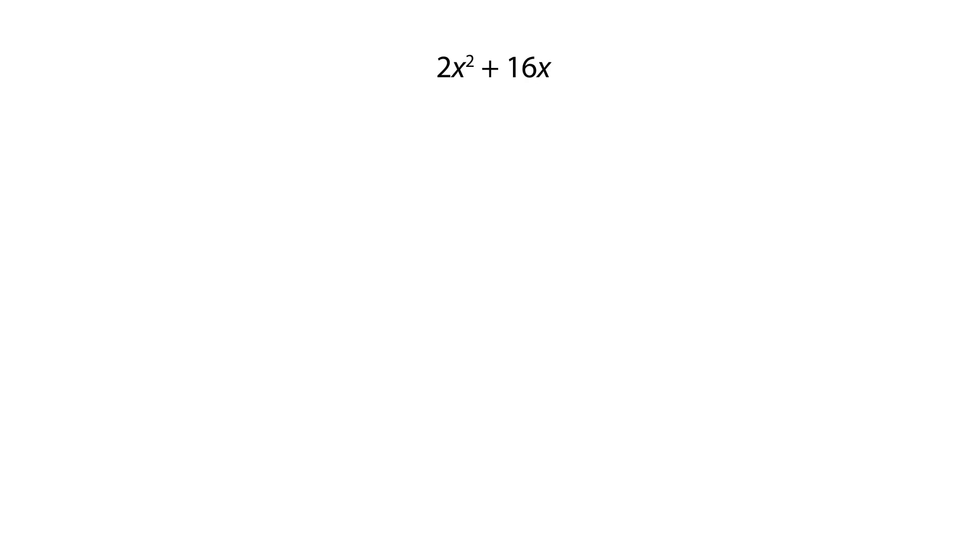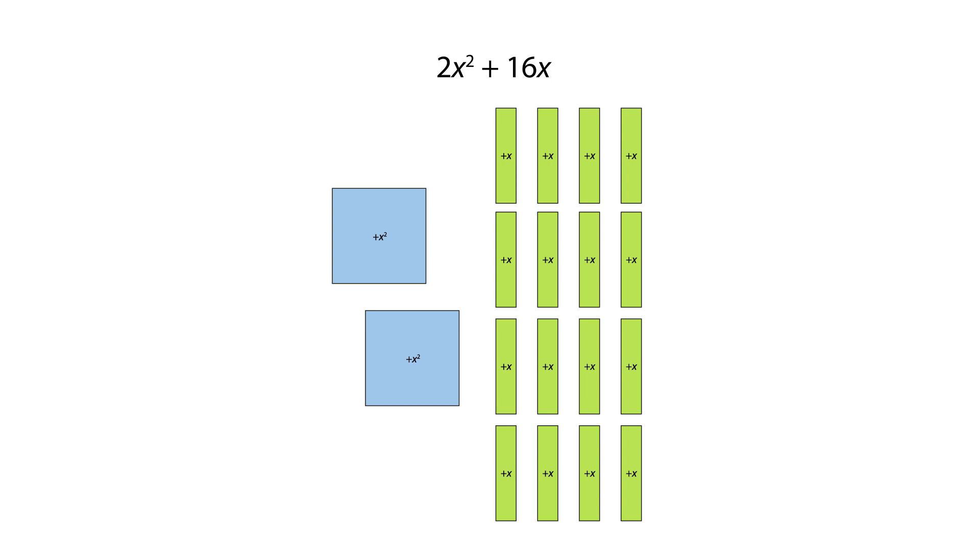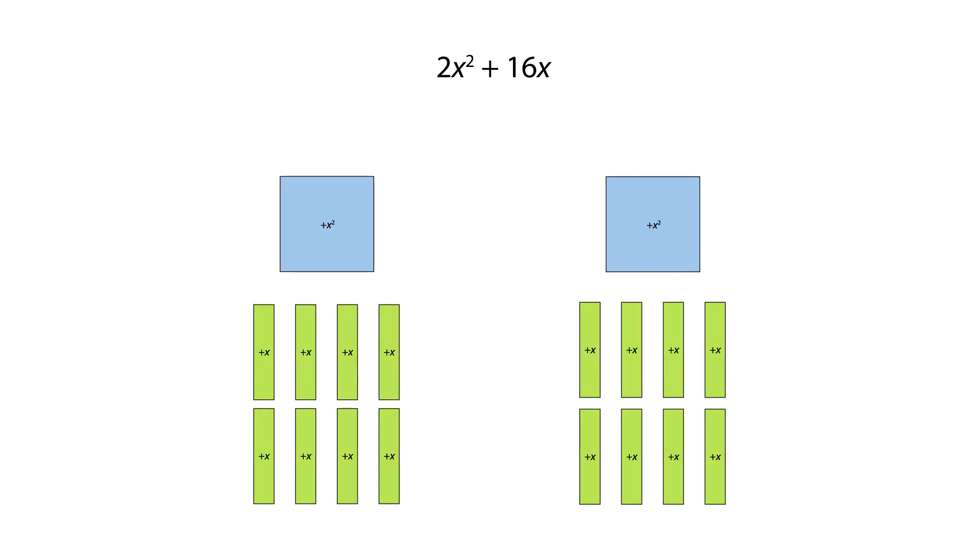For the expression 2x squared plus 16x, there are several ways of factorizing. We can arrange the tiles into two equal groups which shows one possible factorization of two multiplied by x squared plus 8x.